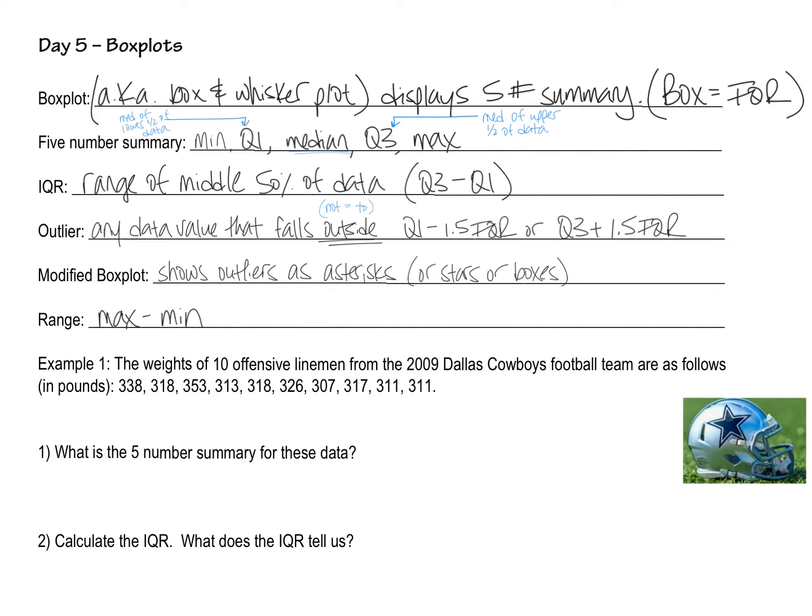And what it does is it displays the five number summary. So what it does is it makes a box in where the IQR is, the Q1 and the Q3. We haven't talked about what that means yet, but we'll get to it in a second. And then there's a whisker that goes to the minimum number and to the maximum number. So just keep that in mind.